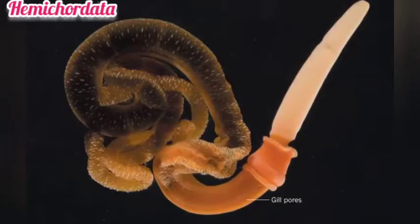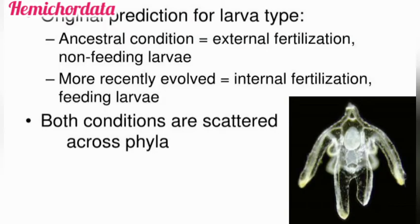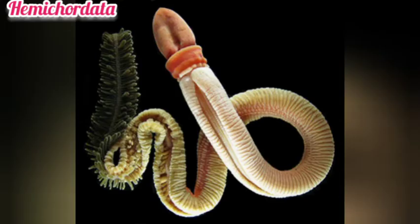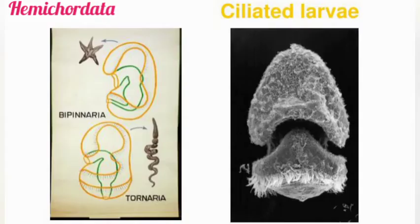The sexes are separated, meaning they have distinct male and female individuals. They exhibit a sexual mode of reproduction. Fertilization occurs outside the body, so it is called external fertilization. Development is indirect in nature and they contain free-swimming tornaria larvae.